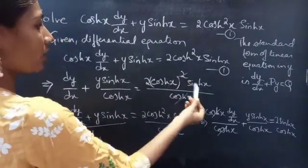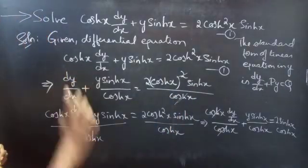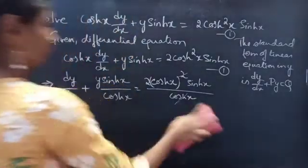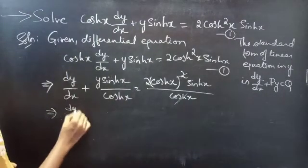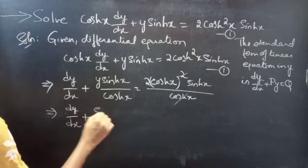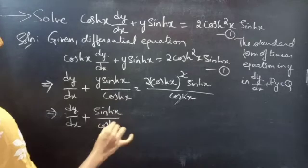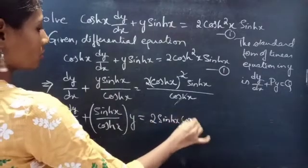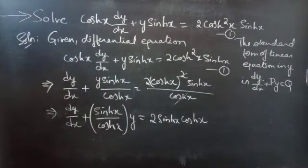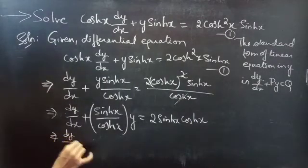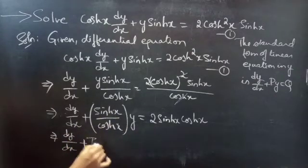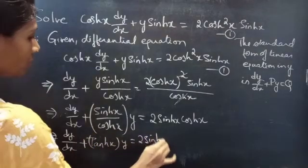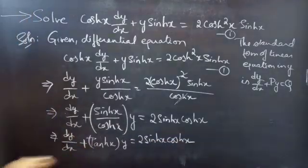When cos Hx gets cancelled, we will get 2 sin Hx into cos Hx. So we can write directly: dy by dx plus sin Hx by cos Hx into y equals to 2 sin Hx into cos Hx. You can write sin Hx by cos Hx as tan Hx, so dy by dx plus tan Hx into y equals to 2 sin Hx into cos Hx, which is linear in y.